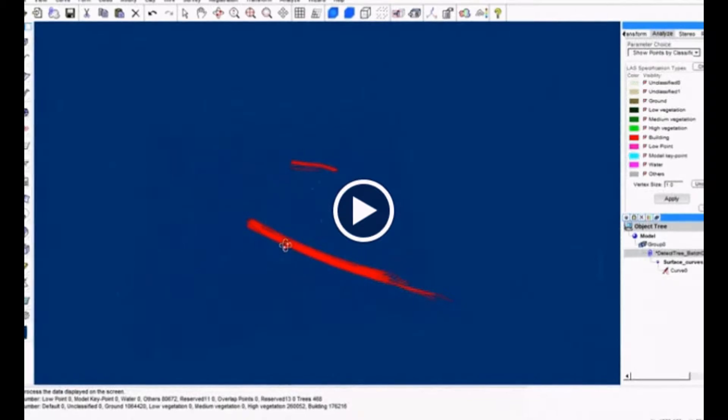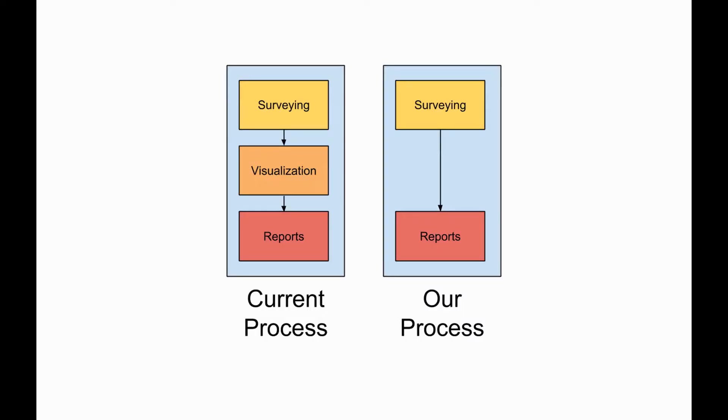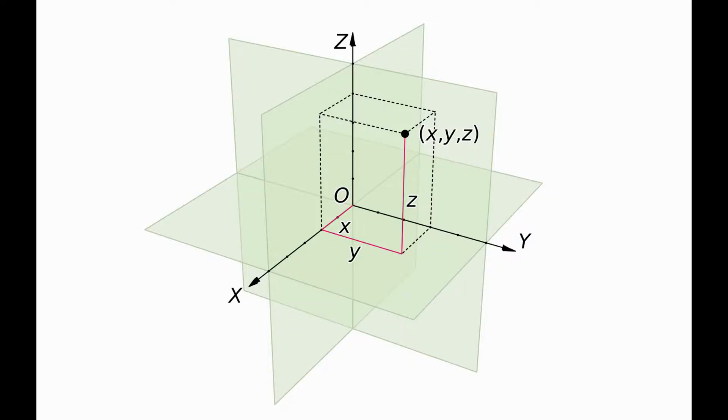Now let's take a step back. What if we didn't need to visualize the data in order to process it? This is the paradigm shift in our approach. What if we completely changed the method in how we analyze, annotate, and create reports from a point cloud dataset? How is this achievable? How do I know it works? What accuracy would a solution not dependent on visualization produce? What are the benefits of such an approach? The question to ask is: how can we go from Cartesian coordinates, or a point cloud, to features?